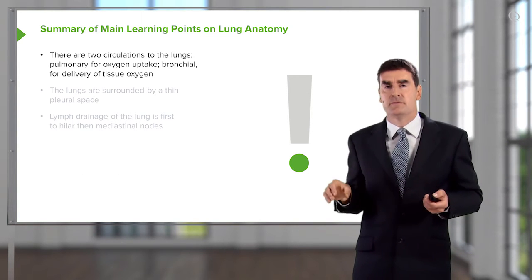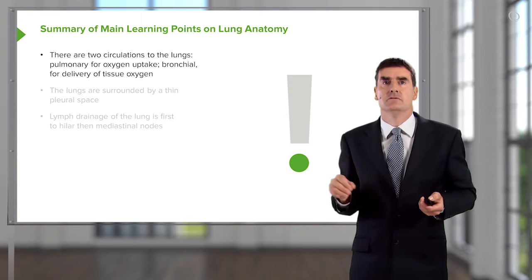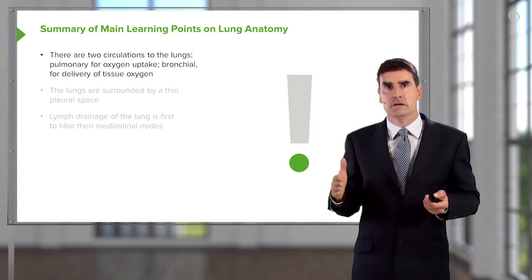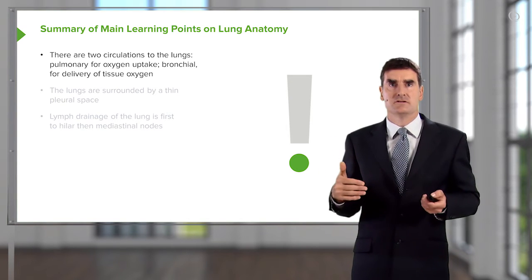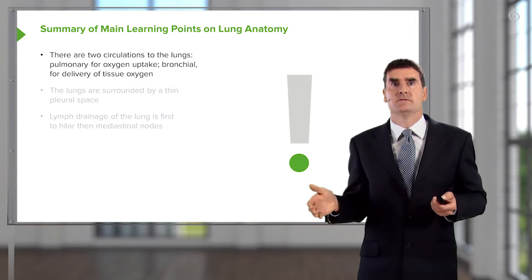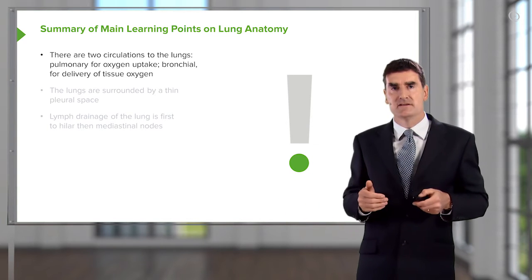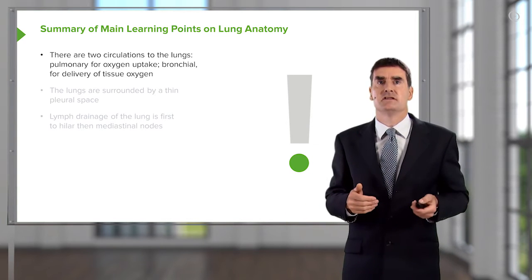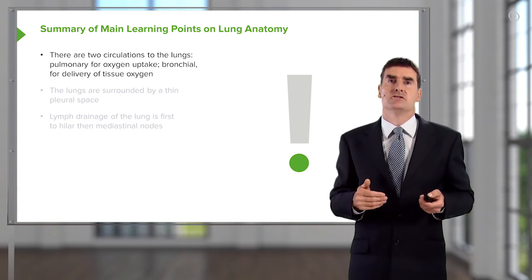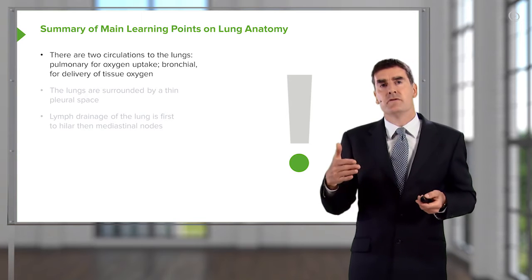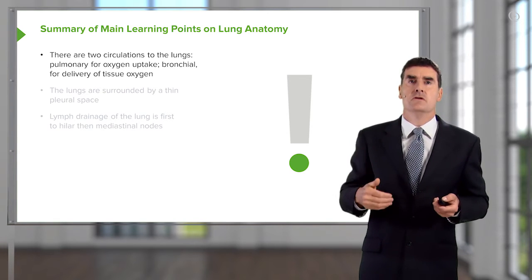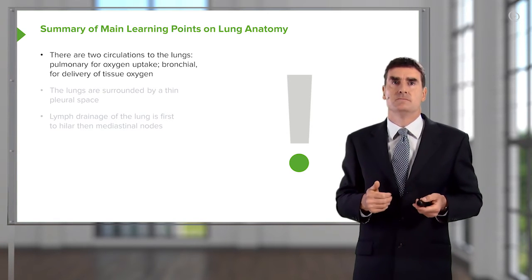The lungs are supplied by two different circulations: the low-pressure pulmonary artery circulation, which is required for oxygen uptake, and the high-pressure systemic bronchial artery circulation, which is required for delivery of oxygen to the lung tissue itself.